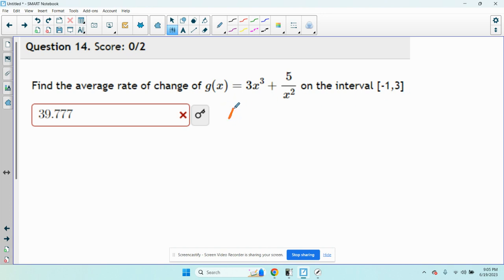So to find the average rate of change, it's going to look similar to the formula for slope, which is like y2 minus y1 over x2 minus x1. But instead of y, we use f of x. So this is going to be f of x2 minus f of x1 over x2 minus x1.